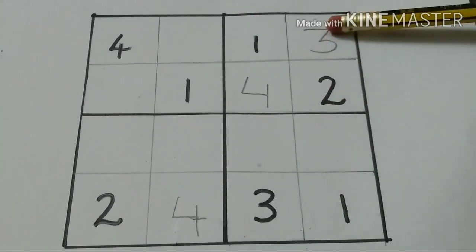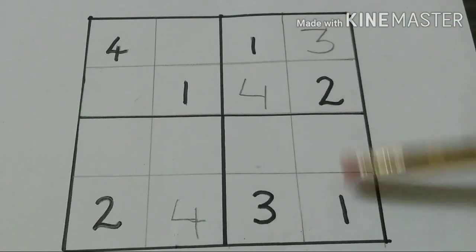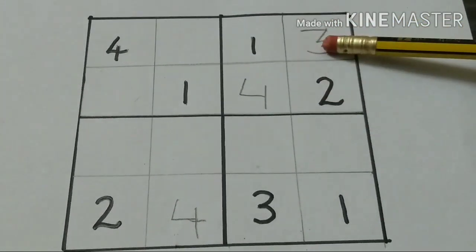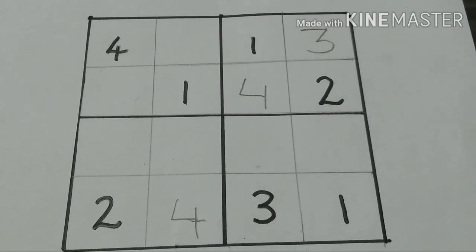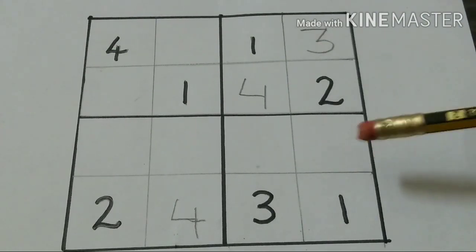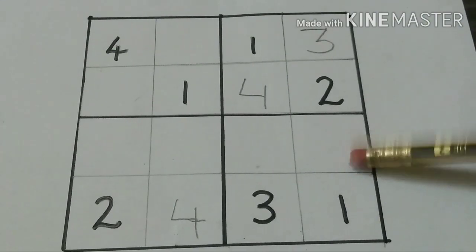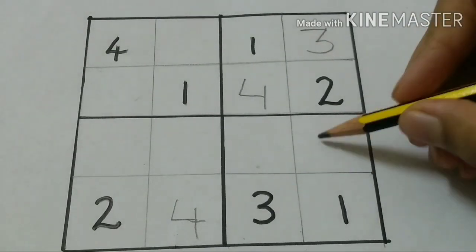Then, in this column, there is 1, 2, and 3. 4 is the remaining number, so we have to write 4.